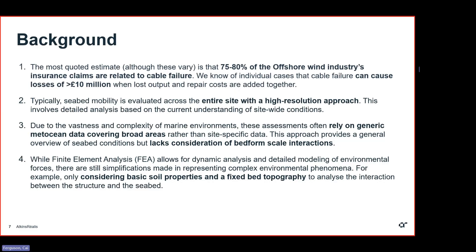The most quoted estimate for insurance claims in offshore wind is that 75 to 80% of all claims are related to cables. It's a known weak point in both legacy offshore wind sites constructed decades ago and recently constructed ones — it continues to be a problem. Repairing a failed cable can cause a loss of at minimum £10 million in lost output and repair costs. And the problem is that when a cable fails due to a design issue in that cable system, it's usually not just one cable you have to replace — it can mean most of them.